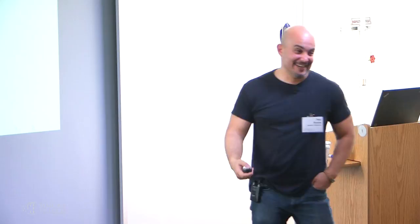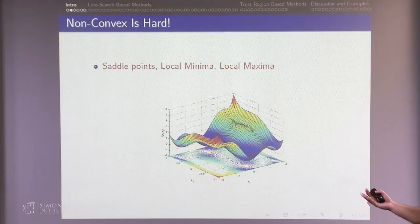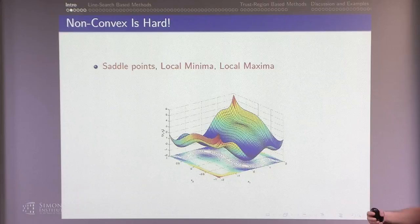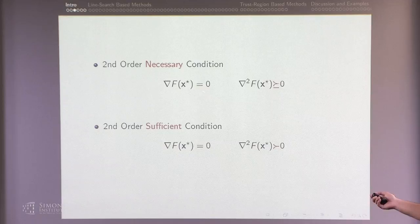Non-convex is hard. The reason being you're not dealing with only one point of interest. You have a lot more to deal with. Some of them are interesting, some of them are the ones that you want to avoid. This includes saddle points, local maximum, local minimum, and so on. Escaping these things, trying to avoid them or get to them, is much harder — it's not as clear as convex problems anymore. In fact, it's not even enough to satisfy the first-order necessary condition, because all stationary points, including global maximum and saddle points, satisfy those.